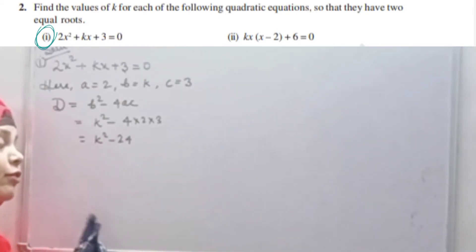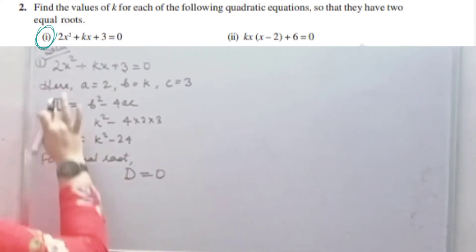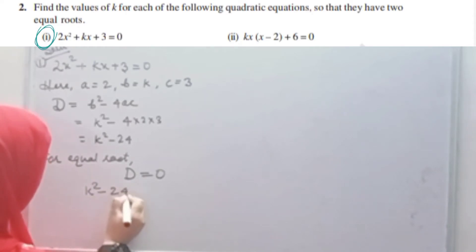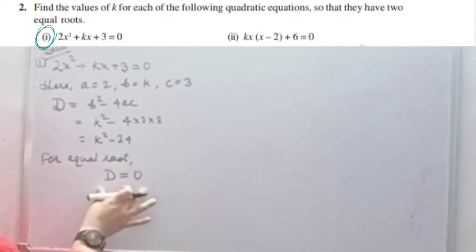But for equal roots, what should the value of D be? Zero. For equal roots, D should be equal to 0. And what is the value of D here? k squared minus 24. And this is equal to 0. So k squared minus 24 equals 0. k squared is 24. Therefore, k equals to root over 24, plus or minus.